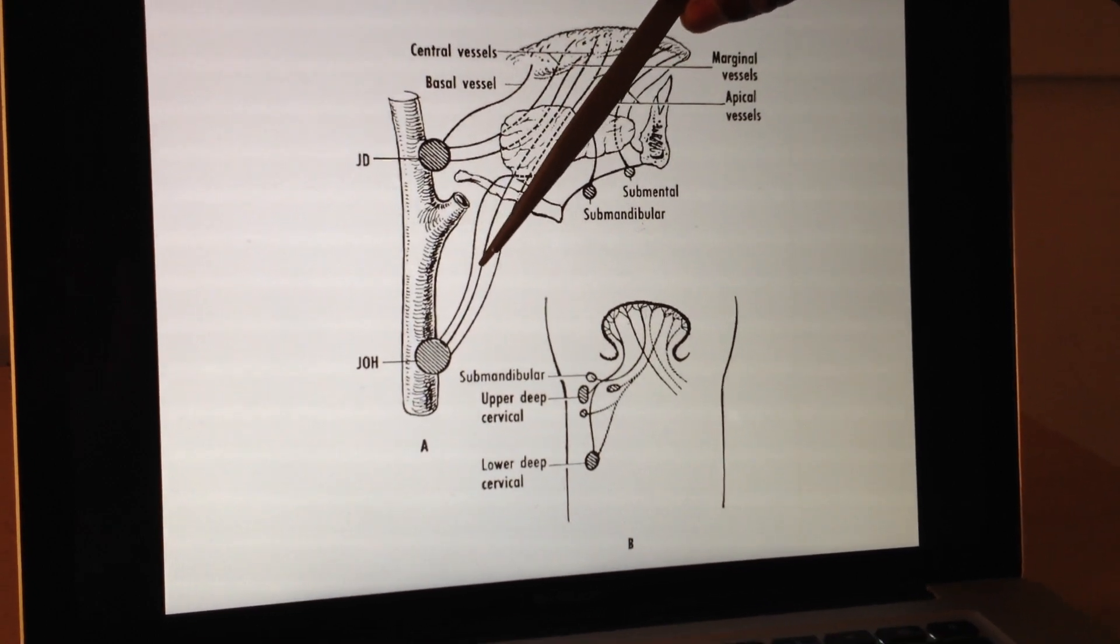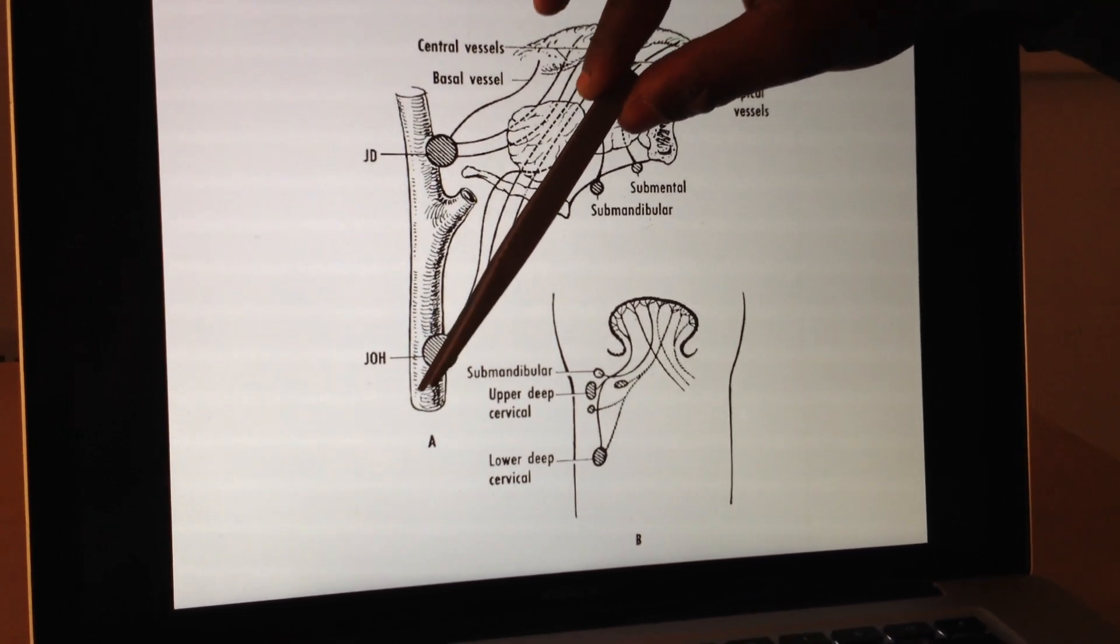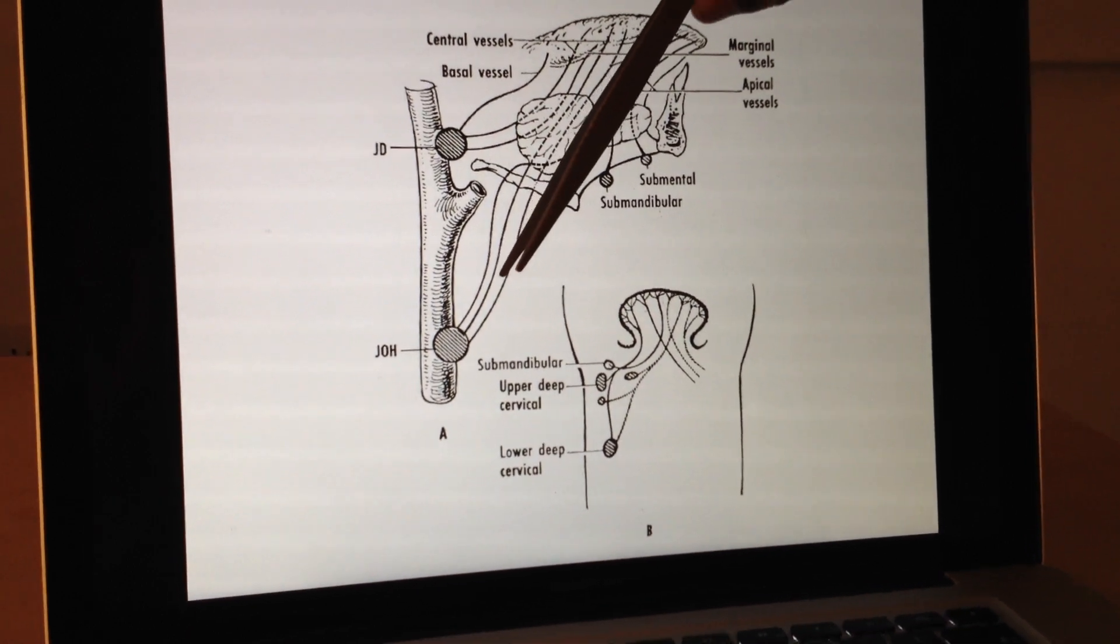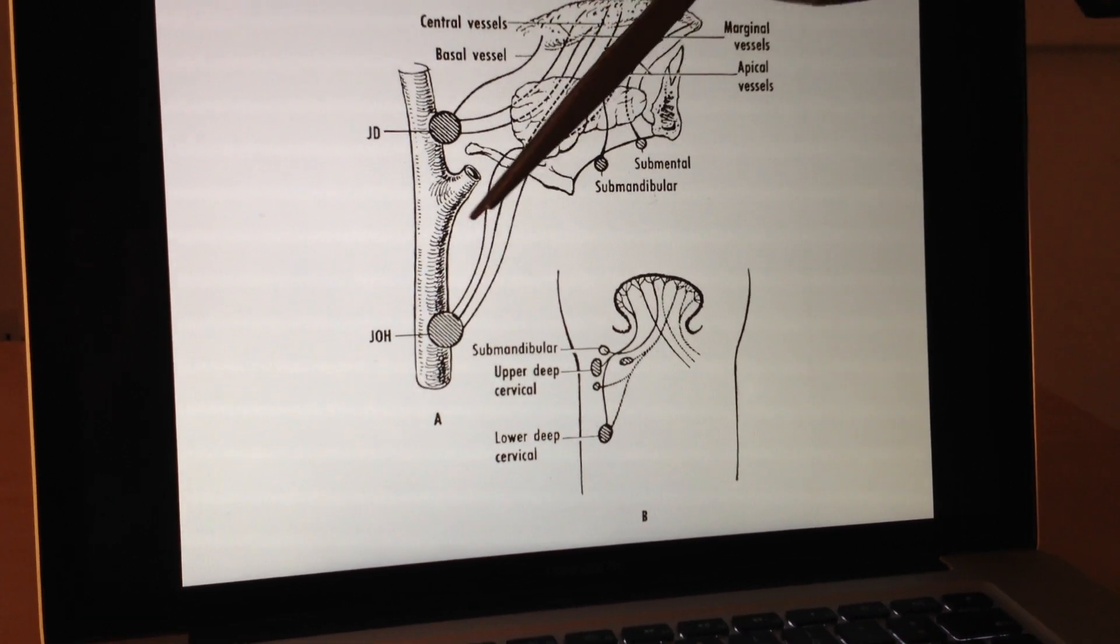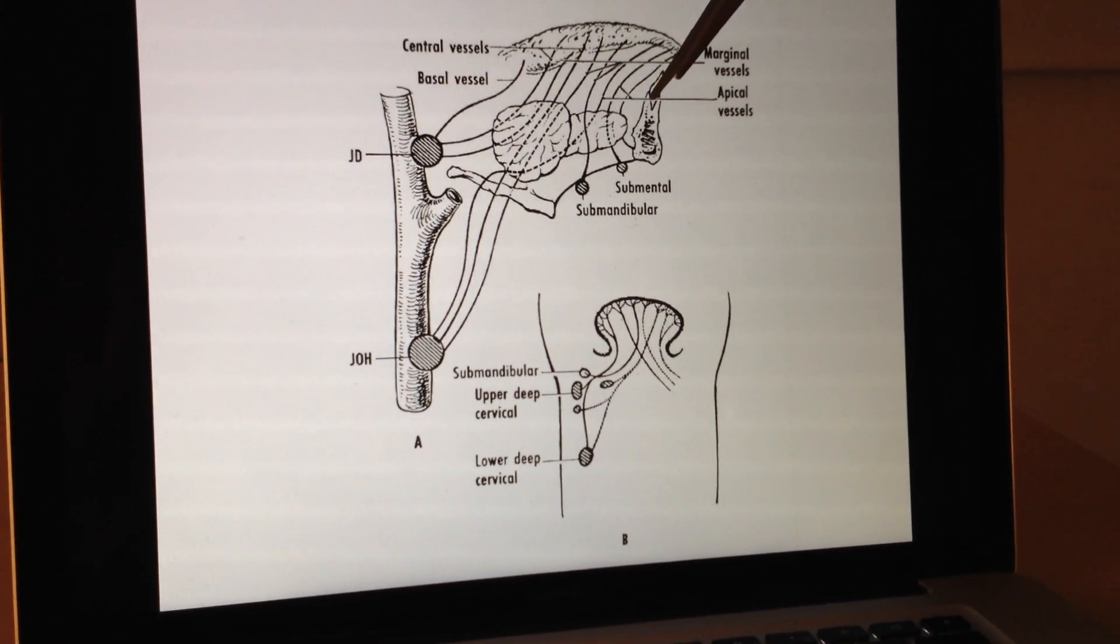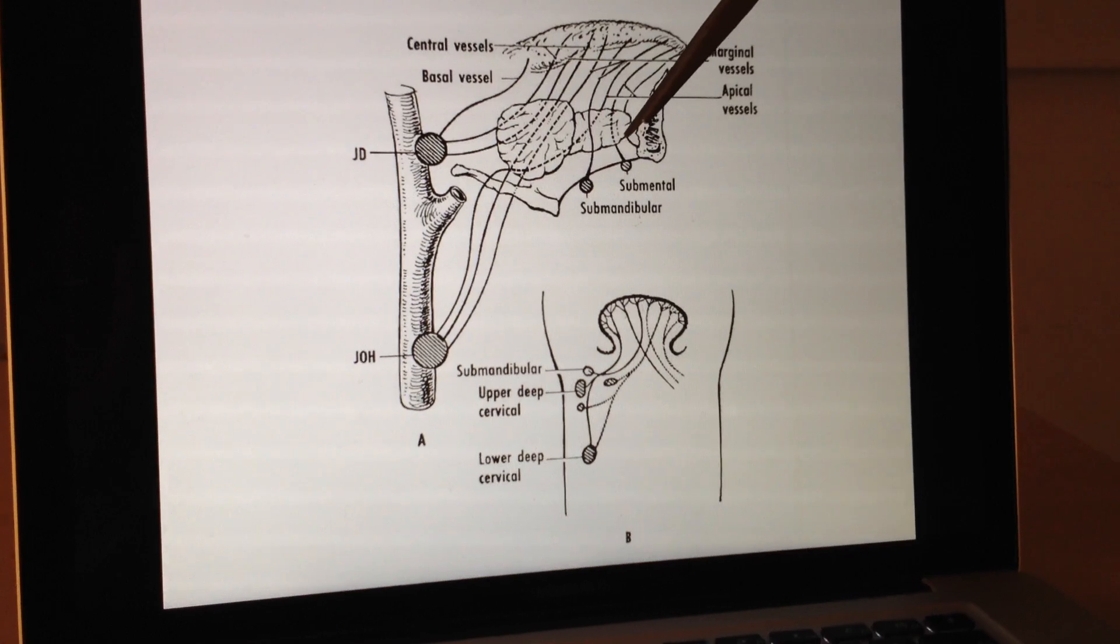If I move this line forward, and I draw a diagonal line now, things from the middle of my tongue and this middle area here are going to go to my jugular omohyoid node. If I move forward again, things from the anterior are going to come down to my submandibular or my submental.